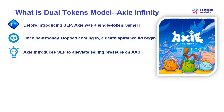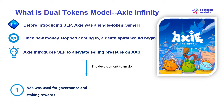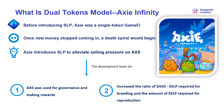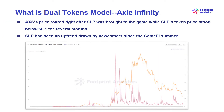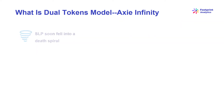To alleviate selling pressure on AXS, Axie introduced SLP in 2020. Whereas AXS was used for governance and staking rewards, players would use the in-game utility token SLP to breed new Axies and earn more SLP. The development team increased the ratio of AXS required for breeding and reproduction. At first, the new model worked as planned. According to Footprint Analytics, AXS's price roared right after SLP was introduced, while SLP's token price stood below $0.10 for several months. SLP had seen an uptrend drawn by newcomers since the game fi summer. However, this trend did not last long and SLP soon fell into a death spiral.